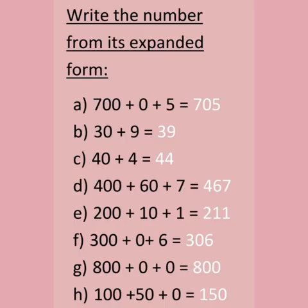Now let's write a number from its expanded form. 700 plus 0 plus 5 is equal to 705. 30 plus 9 is equal to 39. 40 plus 4 is equal to 44. 400 plus 60 plus 7 is equal to 467. 200 plus 10 plus 1 is equal to 211. 300 plus 0 plus 6 is equal to 306. 800 plus 0 plus 0 is equal to 800. 100 plus 50 plus 0 is equal to 150.